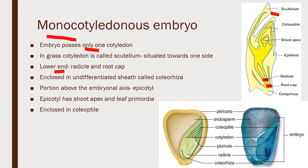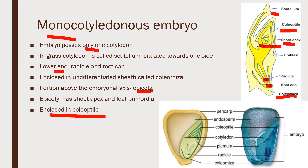The cotyledon is enclosed in a sheath called coleorrhiza. The portion above the embryonal axis is called the epicotyl region, which has the shoot apex and a few leaf primordia from which leaf-like structures arise. These are enclosed in the coleoptile region. So the lower end is enclosed in coleorrhiza and the upper end is enclosed in coleoptile.